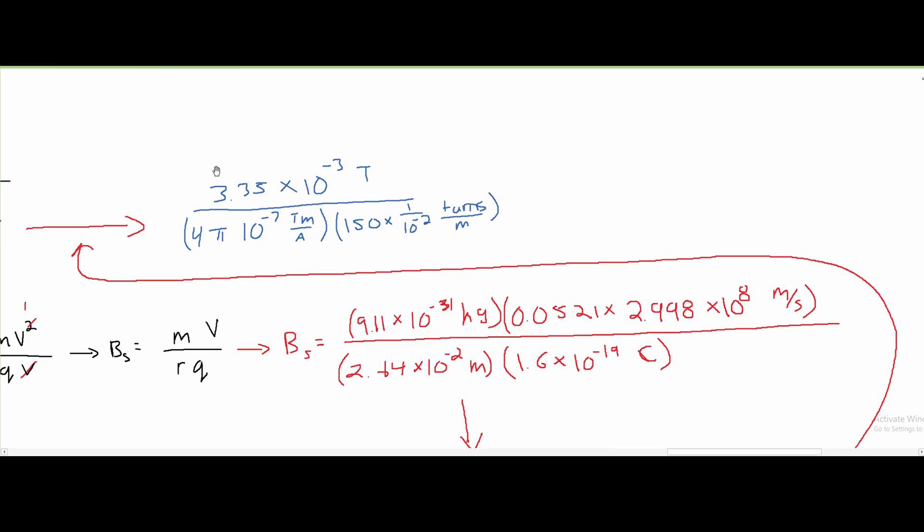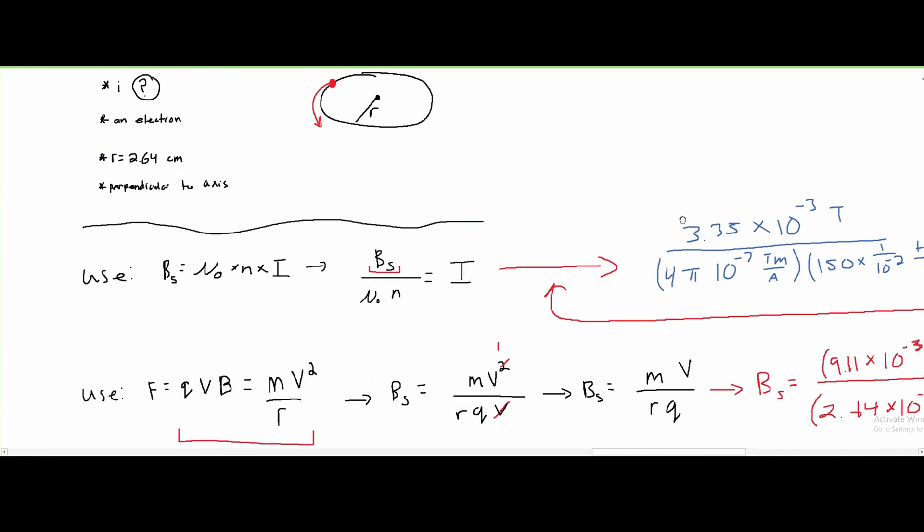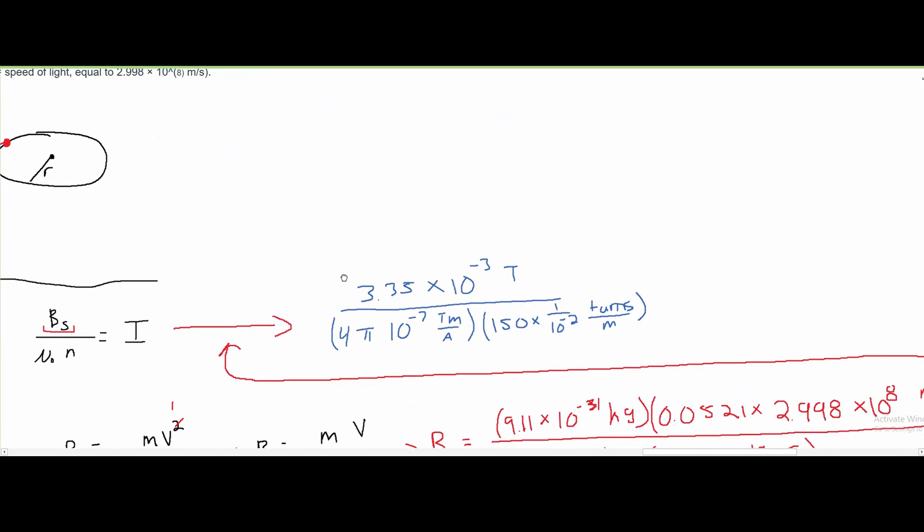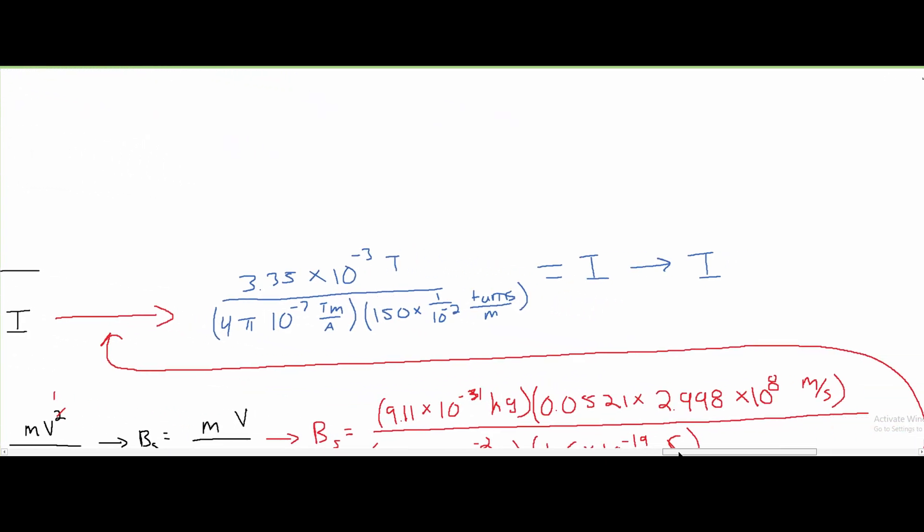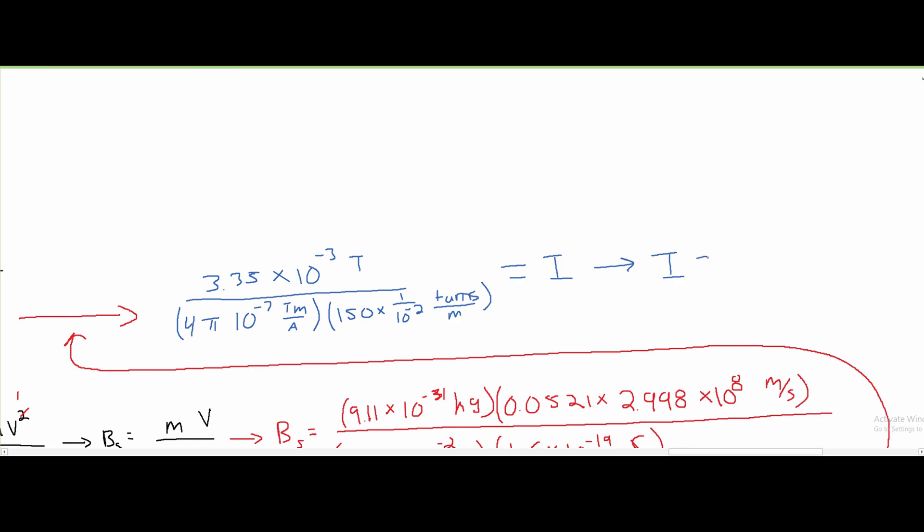And it's 1 over 10 to the negative 2, and not just 10 to the negative 2, because we have turns per meter. And this is going to be equal to our I. And after we carefully plug all of this into our calculator, we are going to get that our I is equal to approximately 0.18 amps.